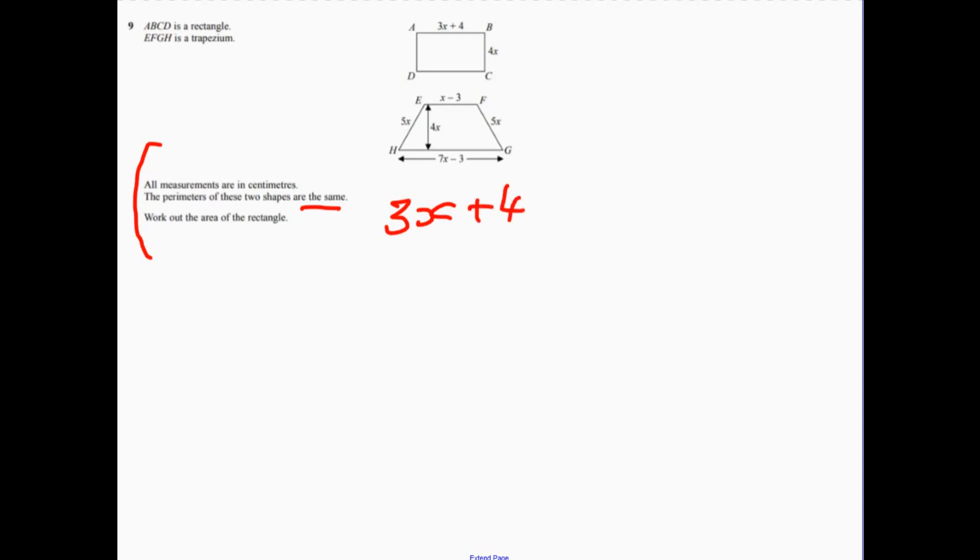So 3x plus 4 plus 4x, and if we multiply that by 2, that's for the rectangle. And we know that's going to be equal to... If we look at the trapezium, we're going to have 5x plus 5x, so that's 10x, and then I've got plus x minus 3 and plus 7x minus 3.